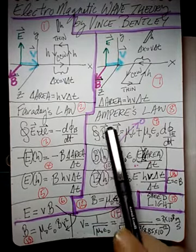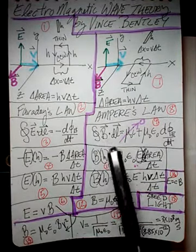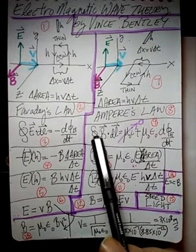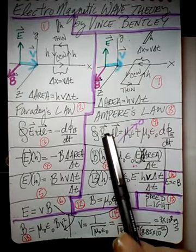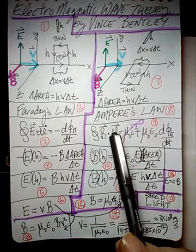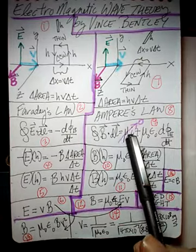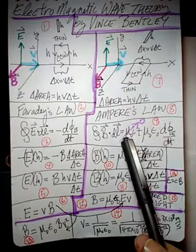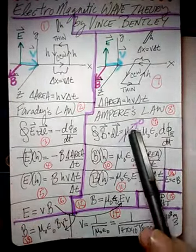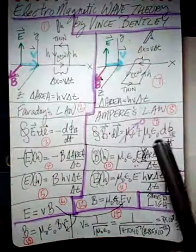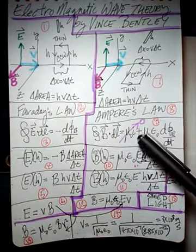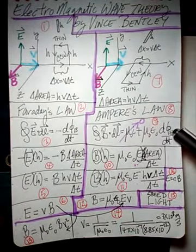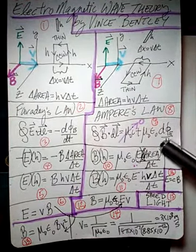Ampere's Law is also one of Maxwell's equations. It states that the integral over a closed loop of the magnetic field vector dotted with the differential length vector equals mu-naught times the sum of the currents through the loop, plus mu-naught times epsilon-naught times the derivative of the electric flux with respect to time.